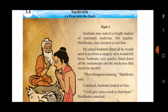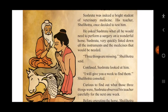Shalihotra asked Sushruta what all he would need to perform a surgery on a horse. Sushruta very quickly listed down all the instruments and medicines that would be needed. Then Shalihotra said, 'Three things are missing,' and Sushruta was confused, looking at his teacher.